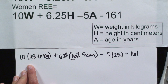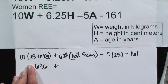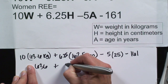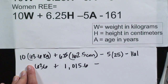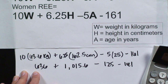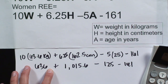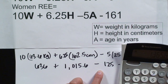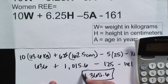I have 63.6 multiplied by 10, which is 636, plus 6.25 times 162.5, which is my height in centimeters — that gives 1015.6 — minus 125 for age, minus 161 for being female, which equals about 1365.6 calories, or roughly 1300 to 1400 calories.